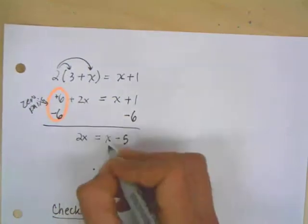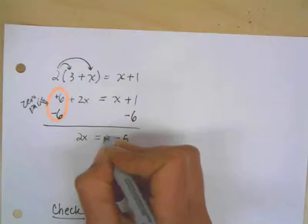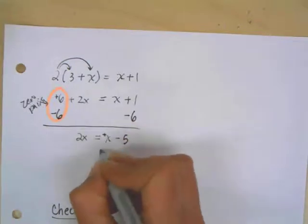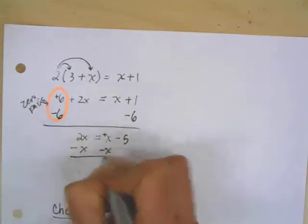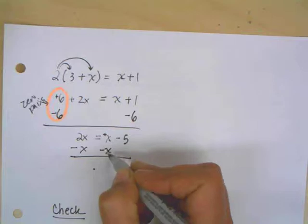And you can see that I have x's on both sides. And my ultimate goal is to get all the x's on one side. So I'm going to get rid of this x here. And once again, it's basically like a plus x. So I'm going to do the opposite, minus x, minus x.